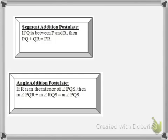So, let's review the segment addition postulate. This says, if Q is between P and R, then PQ + QR = PR.